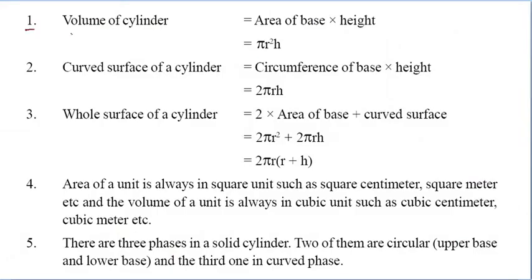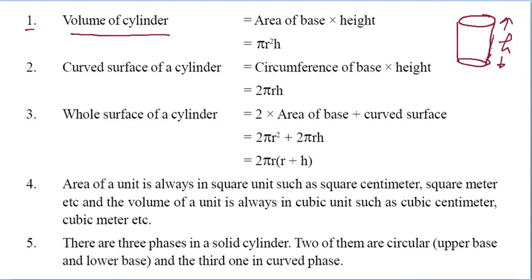First one: the Volume of Cylinder. So first of all, what is a cylinder? A cylinder has two circular bases, height h, and the radius of the base is r. Volume of Cylinder is Area of Base into Height, that is pi r square h. So Volume V is equal to pi r square h.